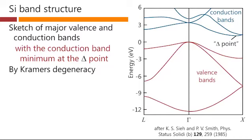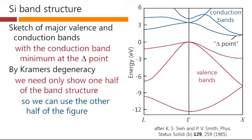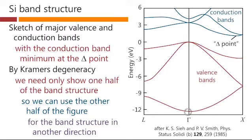And by Kramers degeneracy, of course, when we're plotting a band structure such as this, we need only show one half of the band structure, for example, along the X direction. There's really no need to show the other half of the band structure heading out in the negative X direction because it's essentially the same. So what we do on these drawings is we use the other half of the figure conventionally to represent the band structure along some other direction. And typically, the one chosen would be the L direction. So this is the band structure going from the center of the Brillouin zone out to the L point. So we're using the other half of the figure for the band structure in another direction.